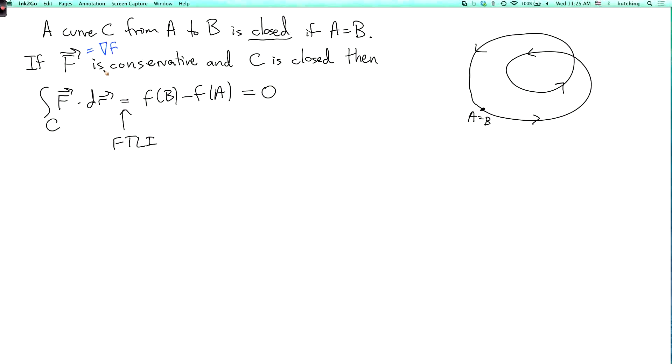Now recall the physical interpretation is that the integral over C of F dot dr is the work done by the force F as you go around the curve C. So the physical interpretation of this equation would be that the work done around a closed curve is zero.